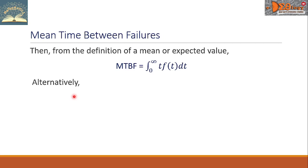Alternatively, we have this formula for MTBF equals the definite integral from 0 to infinity of this quantity, 1 minus capital F of T, then DT. This capital F of T is the cumulative probability function.